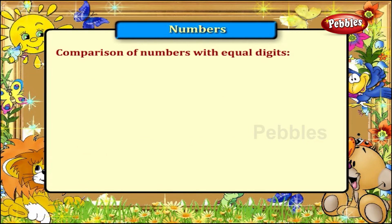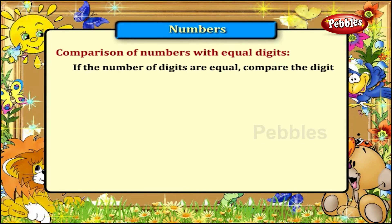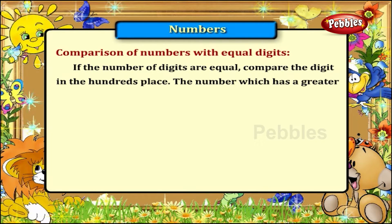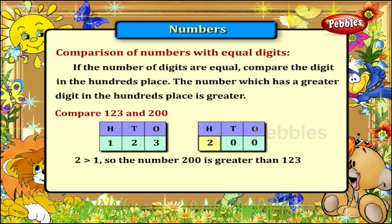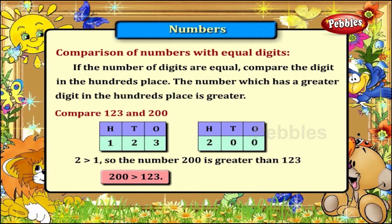Comparison of numbers with equal digits. If the number of digits are equal, compare the digit in the hundreds place. The number which has a greater digit in the hundreds place is greater. Now let us compare 123 and 200. 2 is greater than 1, so the number 200 is greater than 123. We write 200 greater than 123.